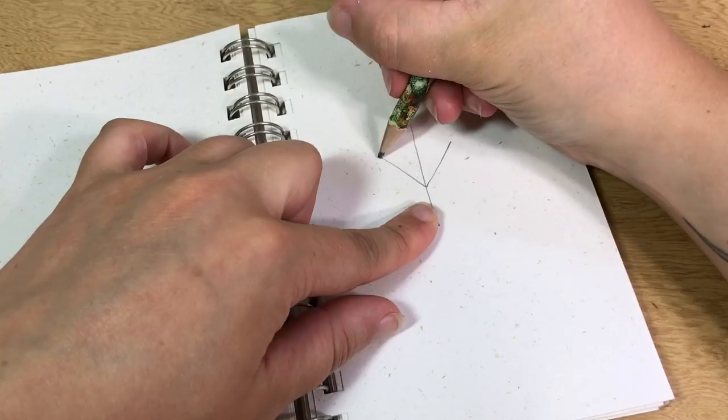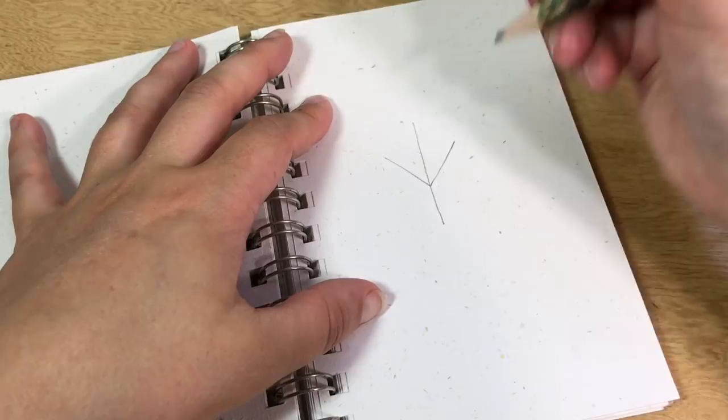go, we got like this bird-looking foot thing. All right, here comes some more lines. We're gonna want to do one right here and right here